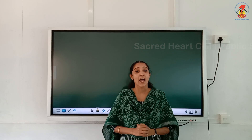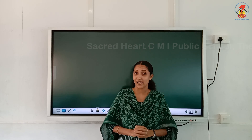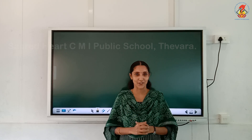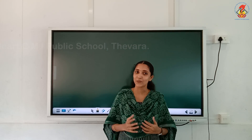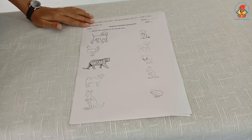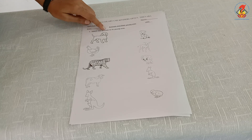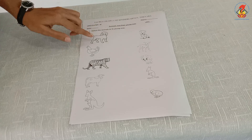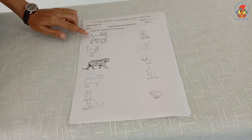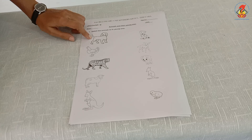Hope you enjoyed today's class. Here you have an activity — find out more animals, their young ones and their sounds, which we did not discuss in this class, like horse, donkey, birds, frog, etc. We can talk about this in the Google Meet. Now let us do the worksheet activity. The question says: match the animals to its young ones. Here you can see the mother animals and their babies on the opposite side. You have to match each animal with its baby.